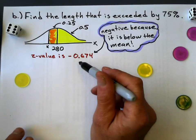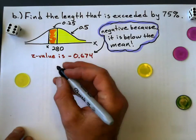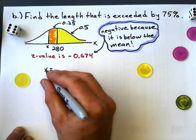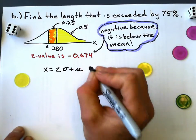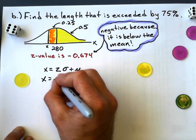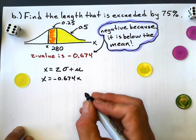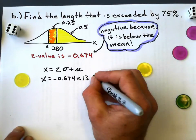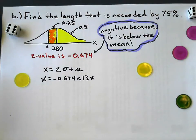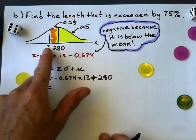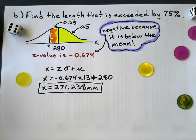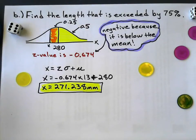So now, I've got the Z value, I've got the mean, I've got the standard deviation, I've got everything I need to find X. And remember, I'm going to use my formula that I rearranged to get X by itself, which is Z times the standard deviation plus the mean. I just did my Z value, it was negative 0.674, times my standard deviation, which is the same, 13, plus the mean, which is 280. And my random variable, it better be less than 280 because it's got to be below that mean. And, of course, it is at 271.238 millimeters, would be the value of X that is exceeded by 75%.